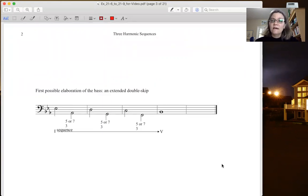We then elaborate it. There's two ways to elaborate this. We can do an extended double skip like here, and then on the weak beat we can do either a triad or a seventh chord. Once you choose, that's the one that you do.